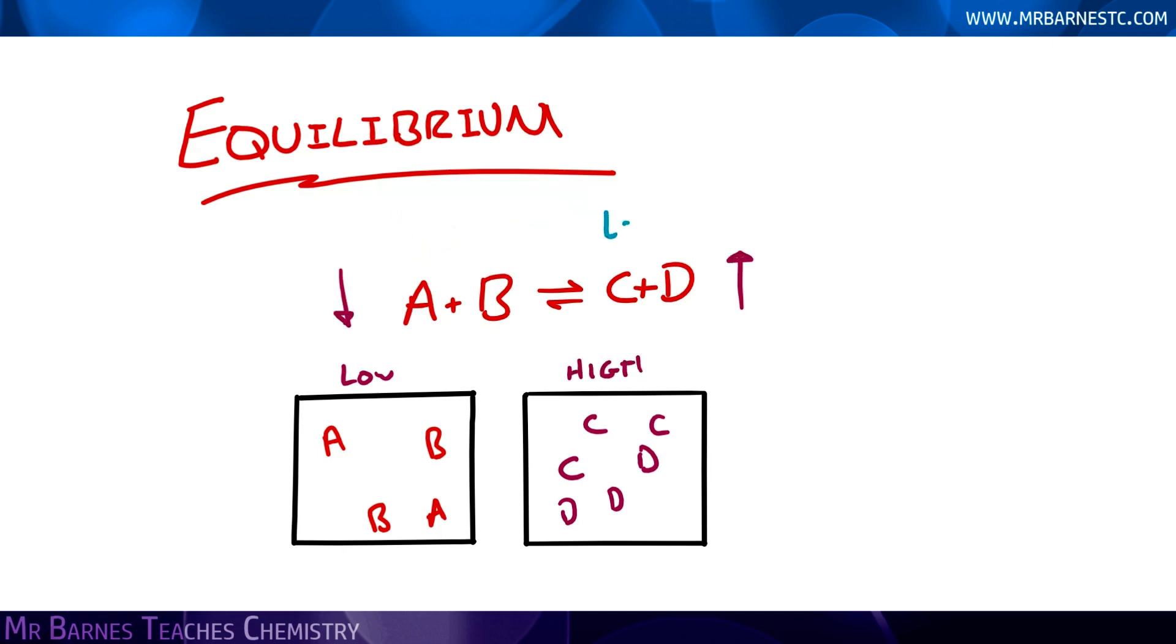Now when the product concentration increases, so I've got lots of C and D, if it's a reversible reaction, the backwards reaction will speed up. So C and D will start reacting together to make A and B.